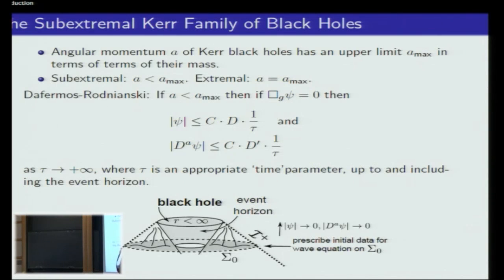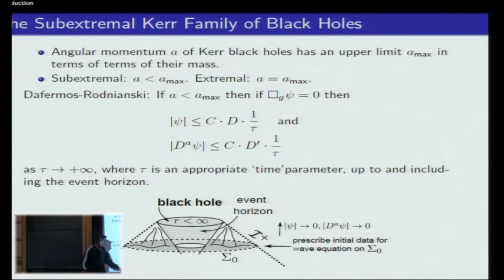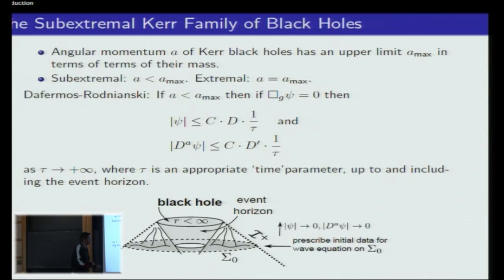The sub-extremal case corresponds to the angular momentum being strictly less than the mass. The extremal case is where the black hole rotates with theoretically maximum spin. Dafermos and Rodnianski were able to show that for sufficiently regular initial data, solutions to the wave equation on sub-extremal Kerr black holes decay — psi and all its derivatives go to zero. The full solution is much harder than proving decay for each mode separately.